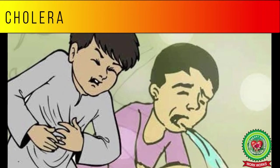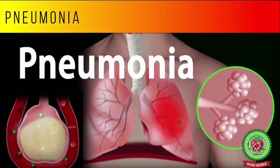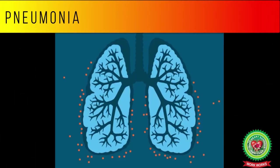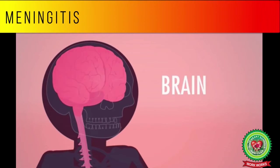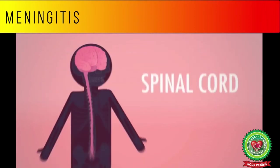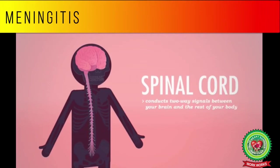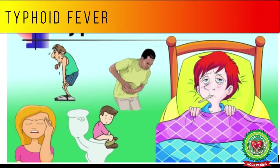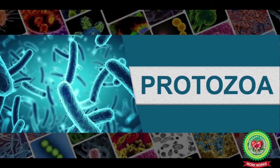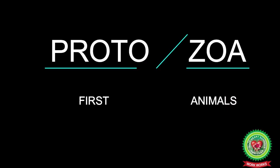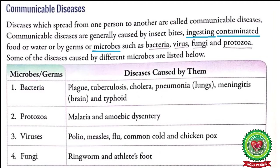Pneumonia is an infectious disease which causes infection of the lungs. Meningitis is a disease that causes swelling, redness, and pain in the brain and spinal cord. Typhoid fever is an infection that spreads through contaminated food and water. Next, diseases caused by protozoa: protozoa microbes cause diseases like malaria and amoebic dysentery.